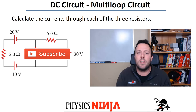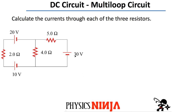So this is what we've got. We've got three batteries: a 20-volt battery, 10, and a 30-volt battery. And we've got three resistors — 2, 4, and 5 ohms. What we want to do is find the current in each of the three resistors.